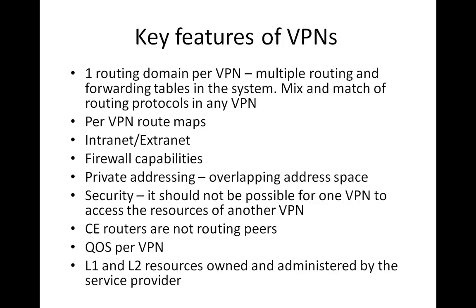The VPN customer also wants firewall capabilities — the ability to control what kind of traffic comes into his network. VPN customers also want to reuse some of their existing IP addresses. If there are different VPN customers, the service provider can build a network such that both customers can continue to use the same IP address. We'll see how MPLS IP technology helps achieve this. And most importantly, it should not be possible for one VPN to access the resources of another VPN — security is one of the most important things all VPN customers look for.